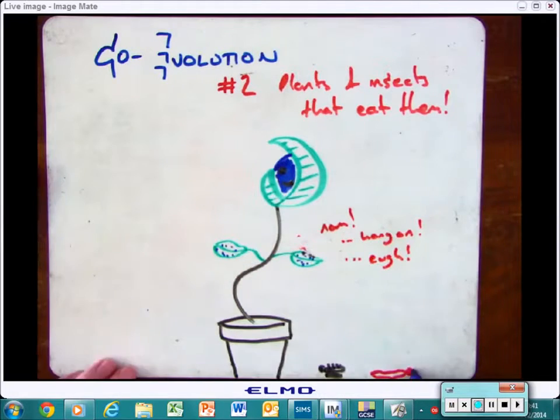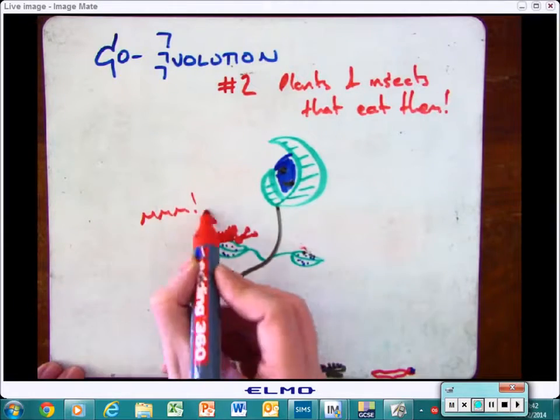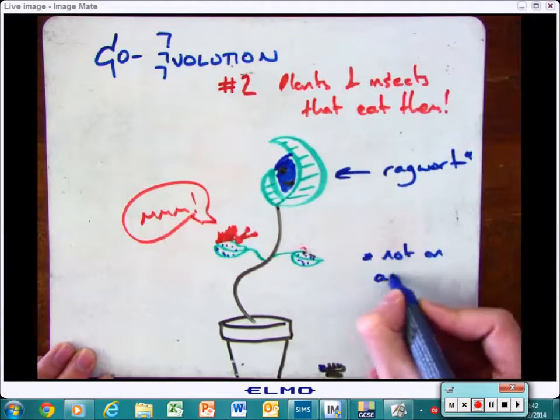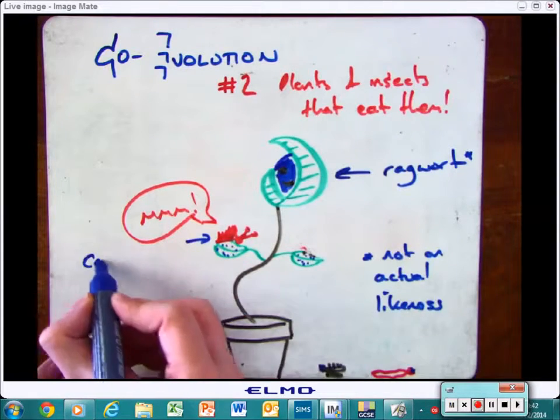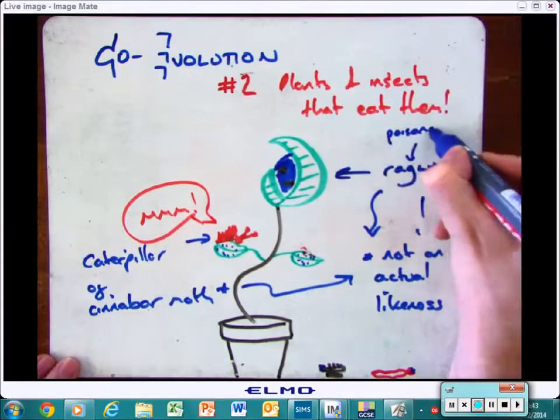So an example that you need to know then is the plant ragwort, which is poisonous to most insects, can be eaten by caterpillars of the cinnabar moth. So therefore it will actually get a lot more food, whereas the other insects will die so the plant will survive a lot more and that animal will have more food.